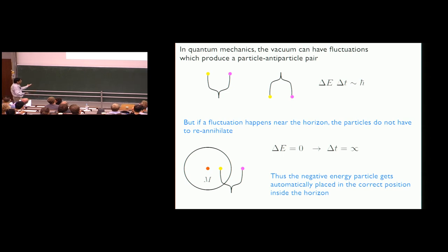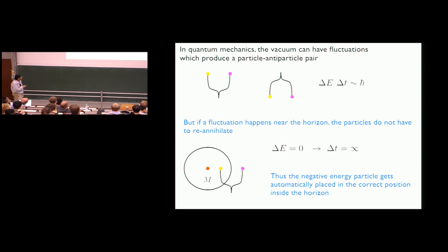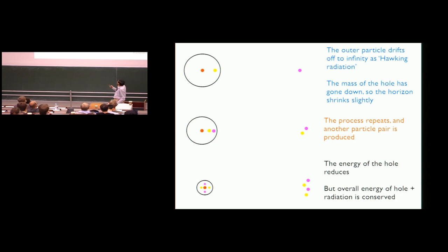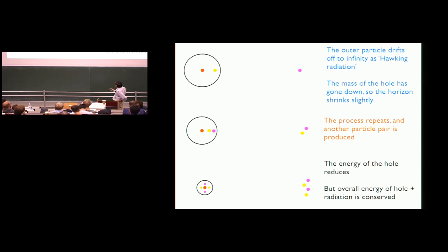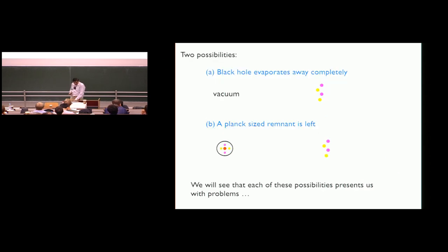Near the horizon of a black hole something interesting happens: the particle inside can have net negative energy because of the minus sign in the gravitational potential, while the particle outside has net positive energy. You can arrange the total energy to be exactly zero. Then ΔE = 0, so Δt doesn't need to be finite — the state can persist forever. The inner particle falls in, the outer particle drifts out to infinity — that's Hawking radiation. The outer particle carries energy away, the horizon radius 2GM/c² shrinks a little, and the process repeats.